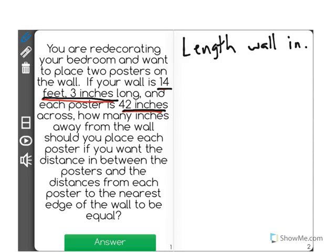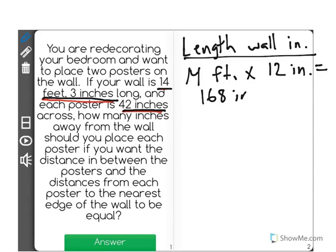So I'm going to find the length of the wall in inches. The way I'm going to do this is I'm going to convert 14 feet into inches by multiplying it by 12 inches per foot. That gives me a total of 168 inches, but I can't forget to add in the 3 inches for a total of 171 inches.